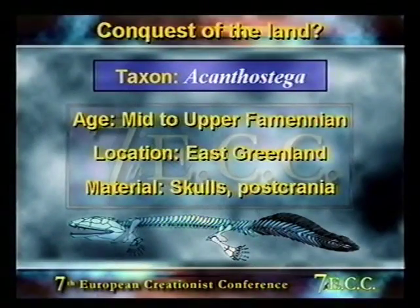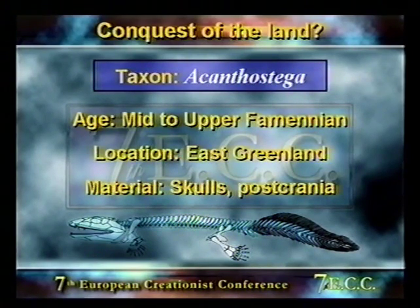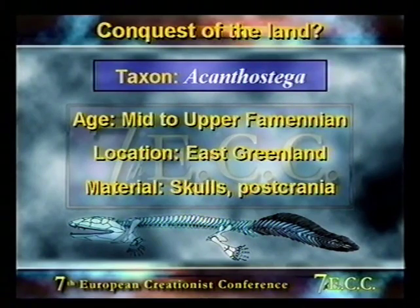Acanthostega comes from East Greenland, mid to upper Famennian. As you can see from the reconstruction, it's a peculiar animal. Its forelimbs look as though they probably were unable to bear the weight of the body on land. Acanthostega may also have had internal gills, and like Ichthyostega, it had a tail fin with fin rays and a lateral line.